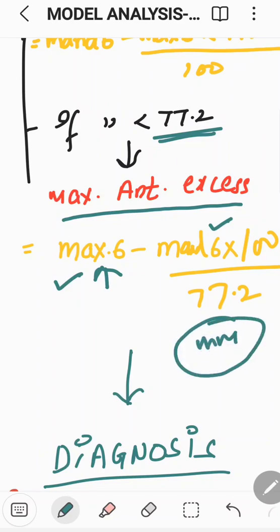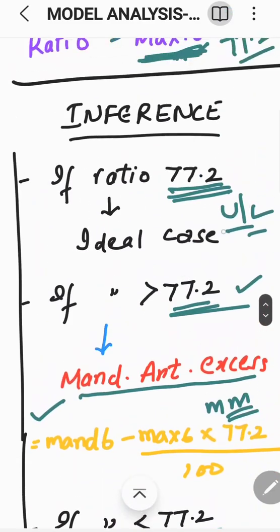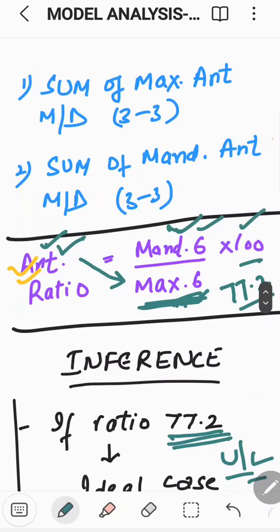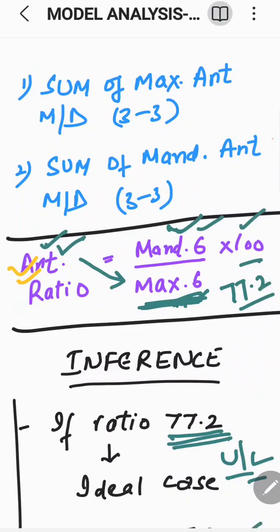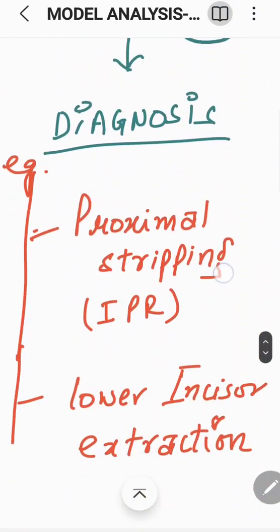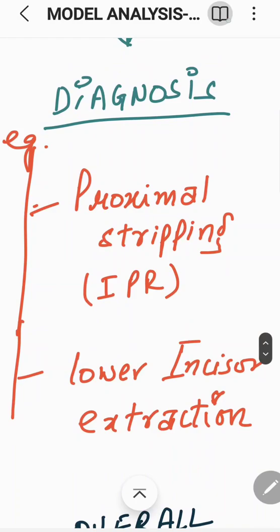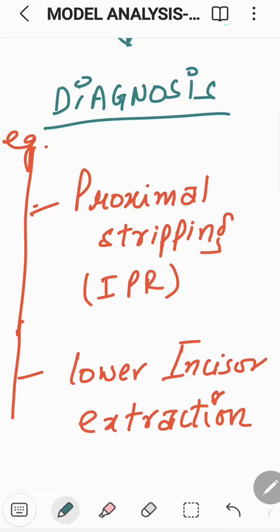Once we know from the anterior ratio that some discrepancy exists, we know what kind and how many millimeters are involved. That helps in diagnosis and treatment planning. If mandibular tooth material excess anteriorly is present, interproximal reduction (IPR) can be done — a slight tooth reduction on either side maintaining symmetry. Or if the discrepancy is greater, lower incisor extraction could be done. So extraction versus non-extraction decisions also depend upon these values.